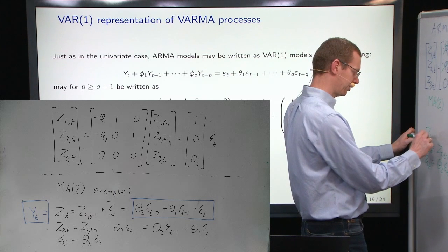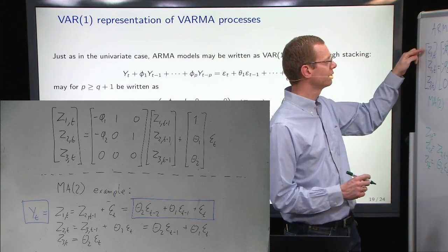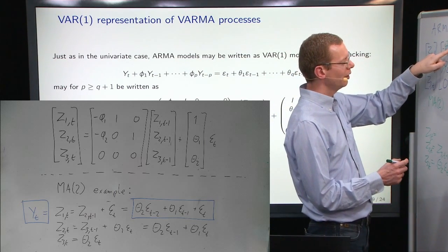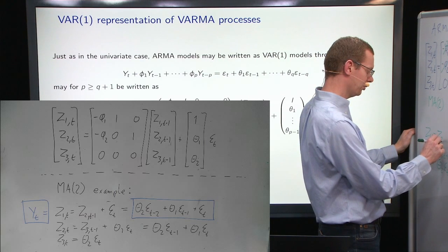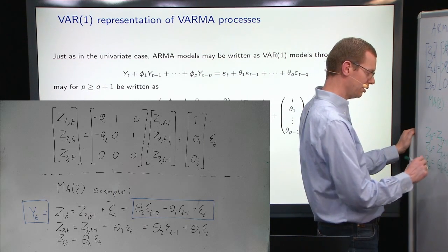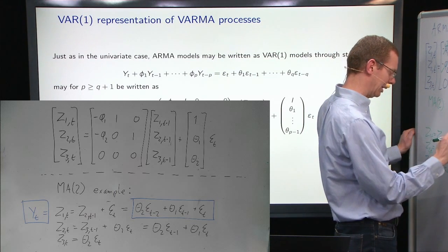Now, what is left is z1,t, which is equal to, let's look up here, a 1 times the previous z2. So, it's z2 at time t minus 1 plus the identity matrix times epsilon t.